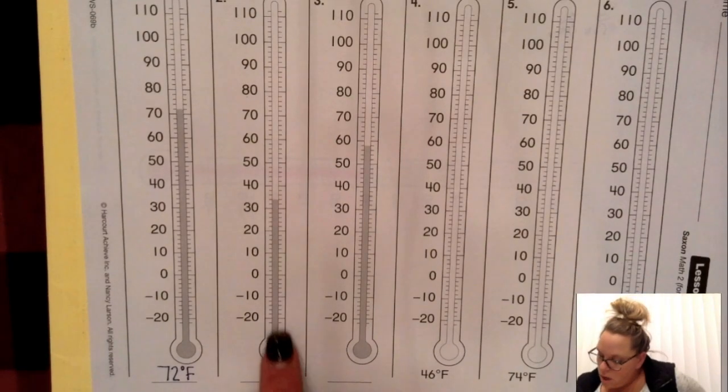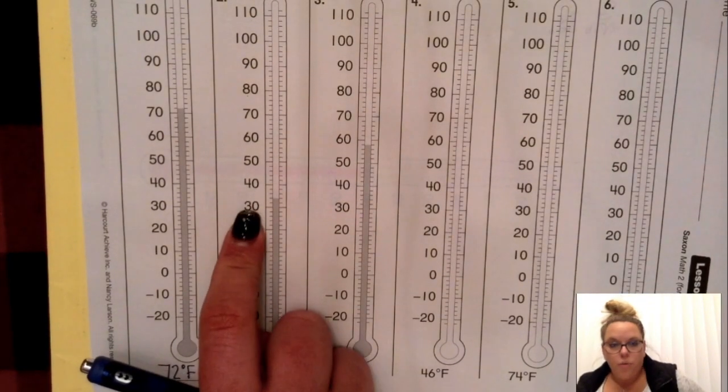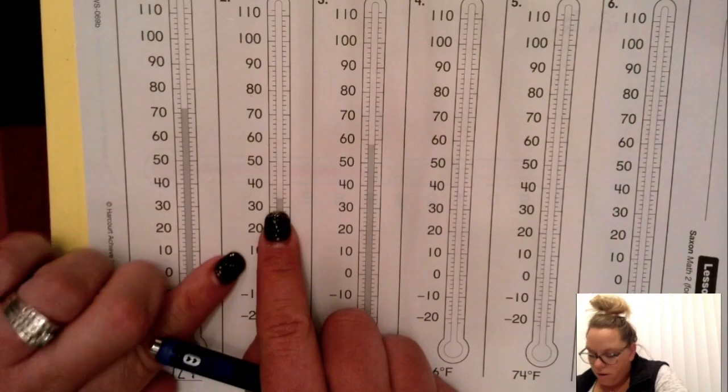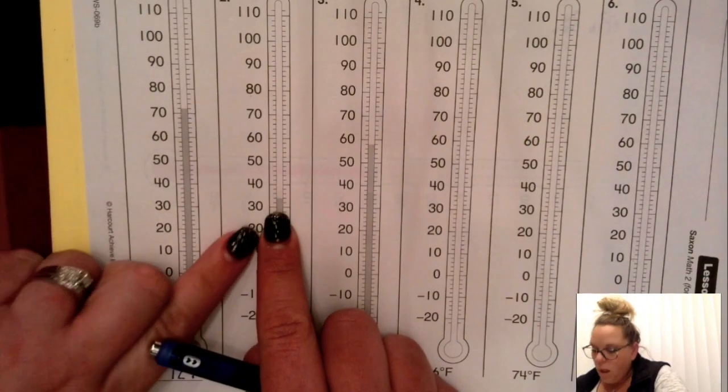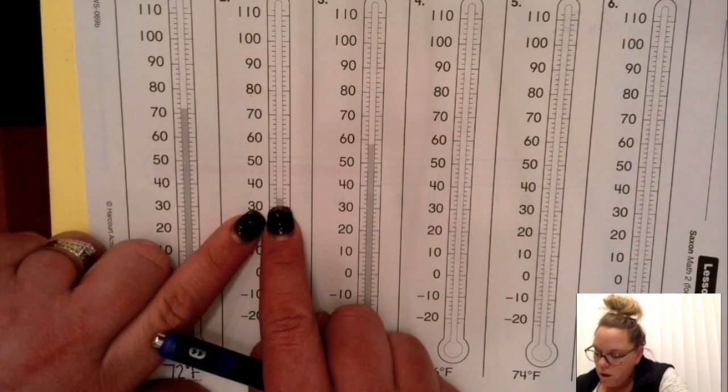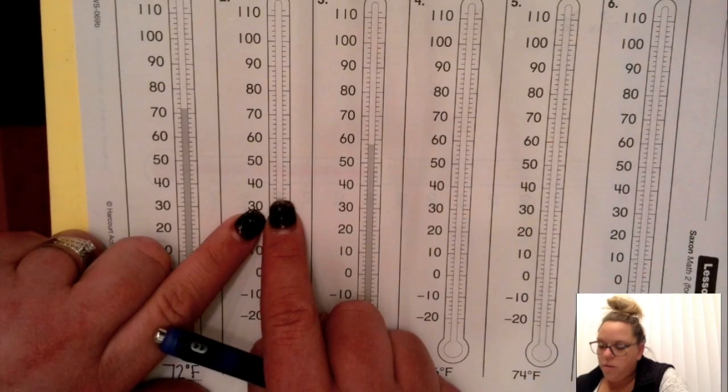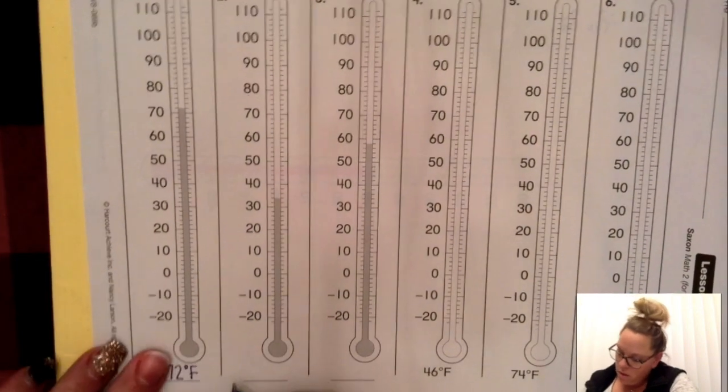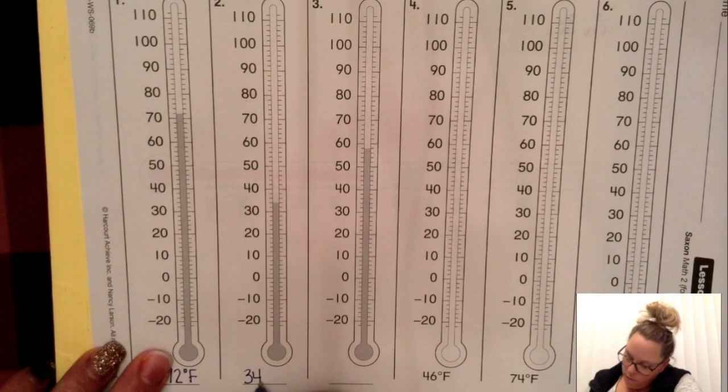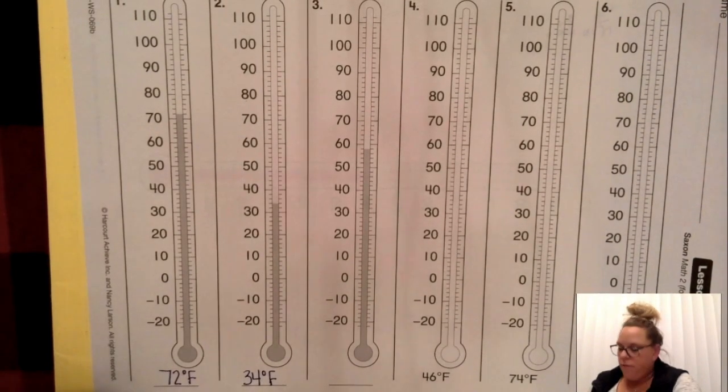Next one. Looks like it's in between 30 and 40, so I'm going to start at 30 and I'm going to count by twos: 32, 34. So I need to write 34 degrees Fahrenheit.